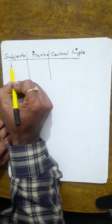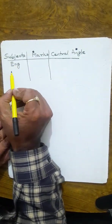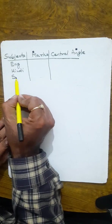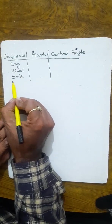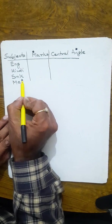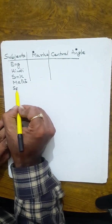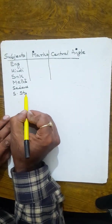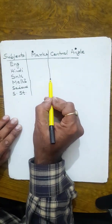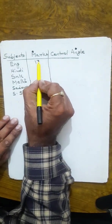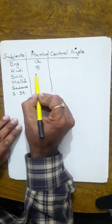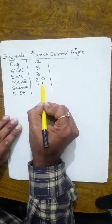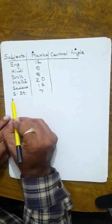The subjects are: English with 12 marks, Hindi with 9, Sanskrit with 8, Mathematics with 20, Science with 16, and SST with 7.